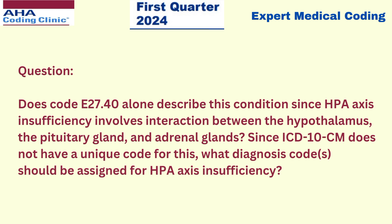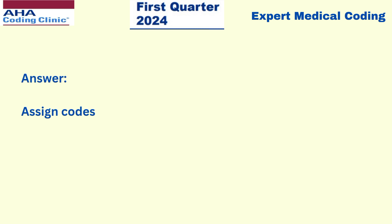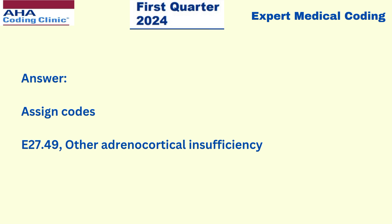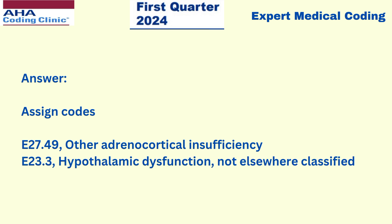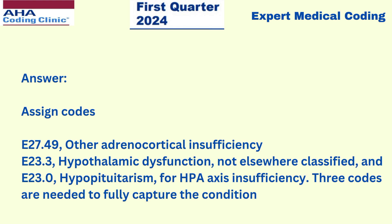Since HPA axis insufficiency involves interaction between the hypothalamus, the pituitary gland, and adrenal glands, and since ICD-10-CM does not have a unique code for this, we have to assign codes E27.49 for other adrenocortical insufficiency, E23.3 for hypothalamic dysfunction not elsewhere classified, and E23.0 for hypopituitarism for HPA axis insufficiency. These three codes are needed to fully capture the condition.